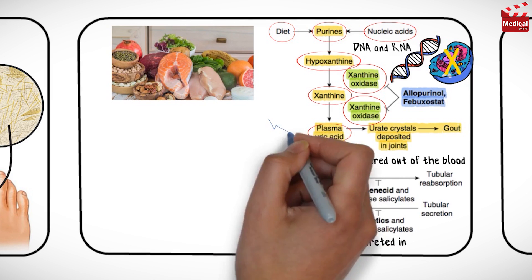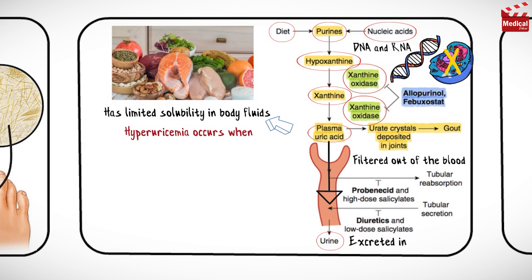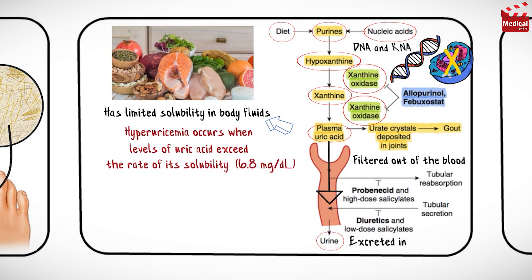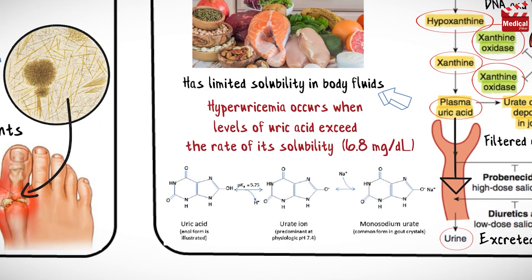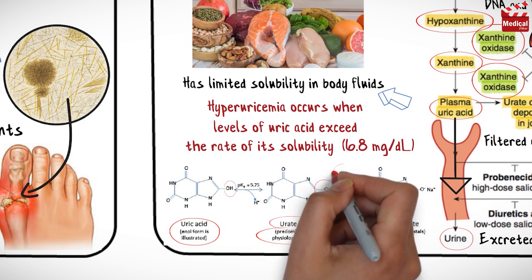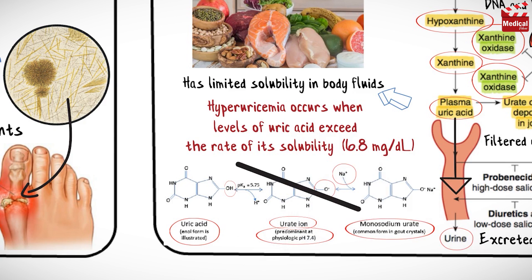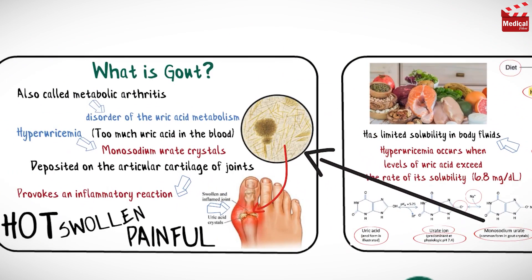Uric acid is a molecule that can be filtered out of the blood and excreted in the urine. Uric acid has limited solubility in body fluids, so hyperuricemia occurs when levels of uric acid exceed the rate of its solubility, which is about 6.8 milligrams per deciliter at a physiologic pH of about 7.4. Uric acid loses a proton and becomes a urate ion, which then binds sodium and forms monosodium urate crystals that precipitate in joints, provoke an inflammatory reaction, and cause the joint to become hot, swollen, and painful.